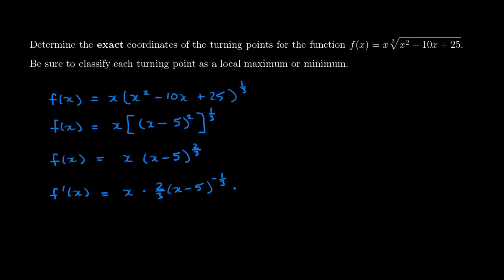The derivative of the inside function is just one, but it's always a good idea to consider the chain rule. Then we move on to the second half of our product rule — the second function multiplied by the derivative of the first — and we get another multiplication by one because the derivative of x is just one. I'll leave that multiplied by one there just to make sure you can see I finished the product rule.